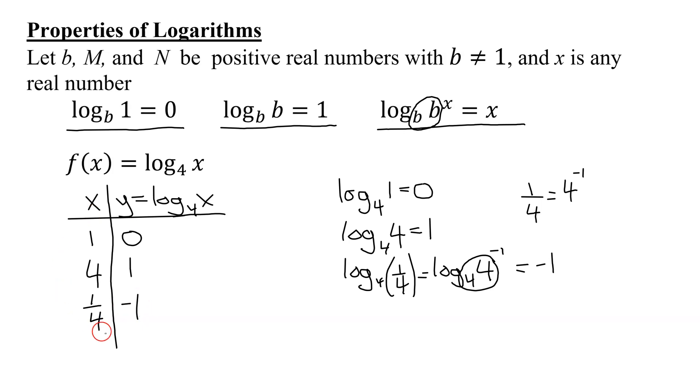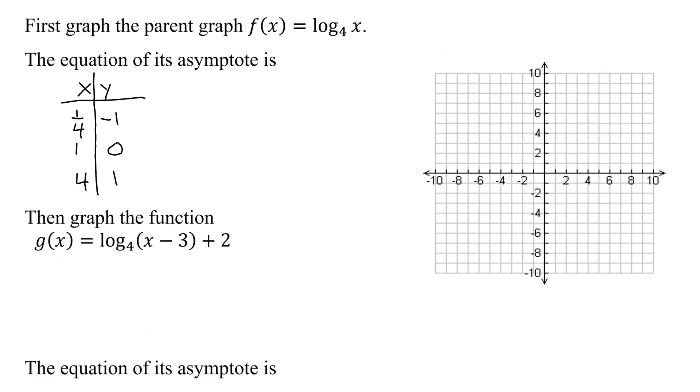That's given me three accurate points to graph. Now we're ready to go back to our main page. I've already put my three accurate points on there, so I need to graph them. (1/4, -1) - this one's kind of hard to do, but about a quarter of the way between 0 and 1, and y equals -1 is about there. The next one is (1, 0), and the last point is (4, 1).